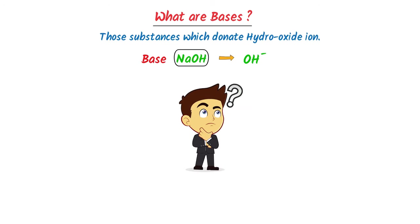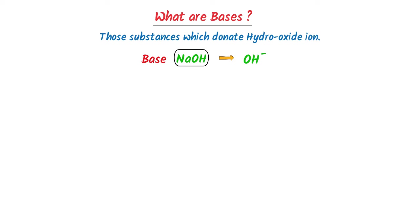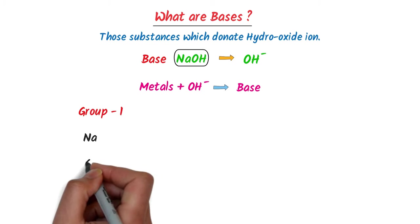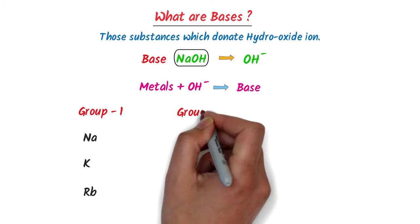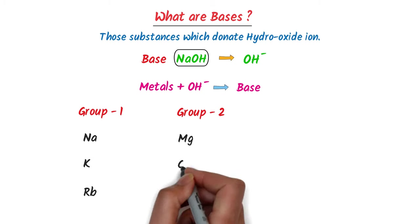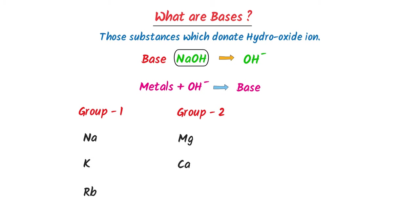How can we learn the list of important bases? I use my personal trick: metals plus hydroxide ion always form bases. For example, consider group 1 elements like sodium, potassium, rubidium. Consider group 2 elements like magnesium, calcium. And group 3 elements like iron, copper, zinc.